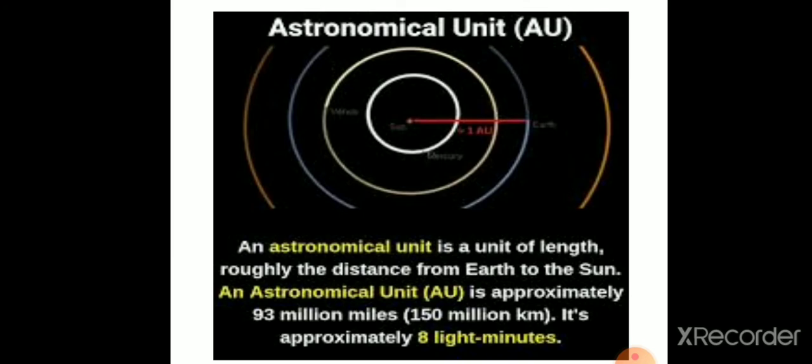Next is 1 astronomical unit, abbreviated as AU. An astronomical unit is a unit of length and it is roughly the distance from Earth to the Sun. 1 astronomical unit is approximately equivalent to 150 million kilometers or approximately 8 light minutes.